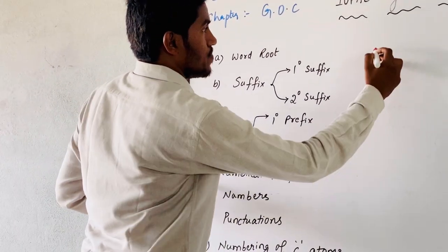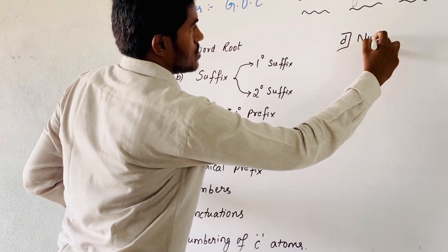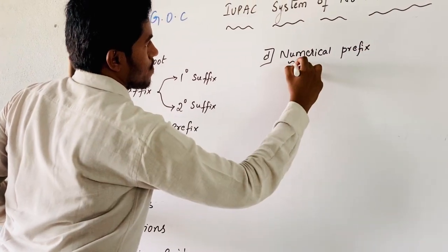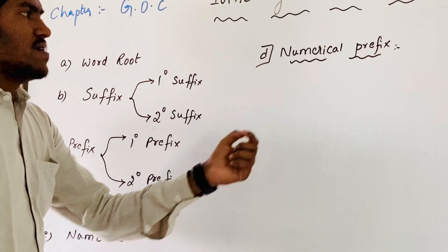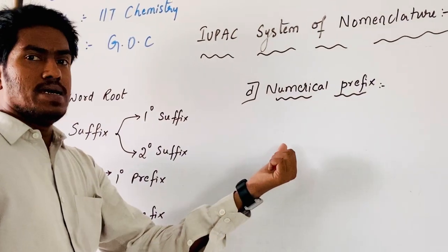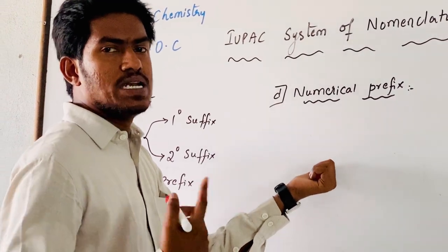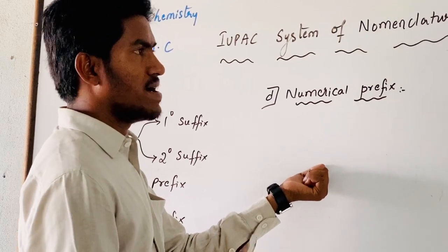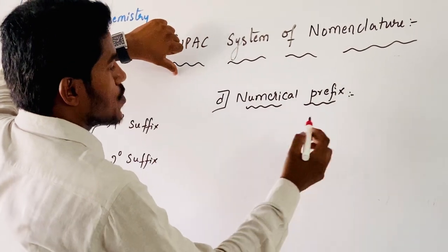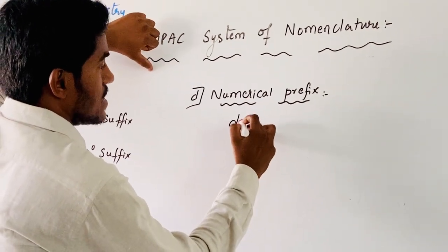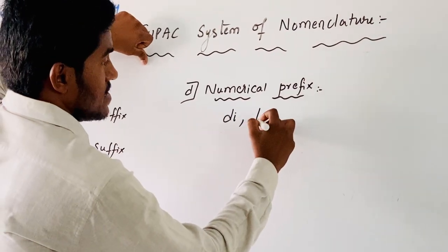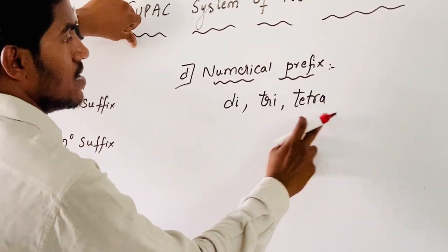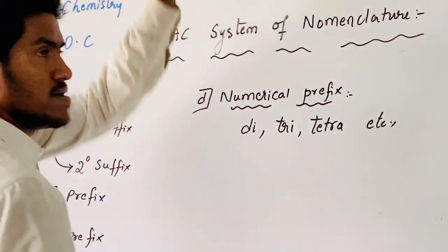Coming to D, that is numerical prefix. In the given carbon chain, if it contains a substituent, or functional group, or a multiple bond that is repeated — more than one time — then at that time, if it is repeating two times, the numerical prefix is 'di'; three times, 'tri'; four times, 'tetra'; and so on.